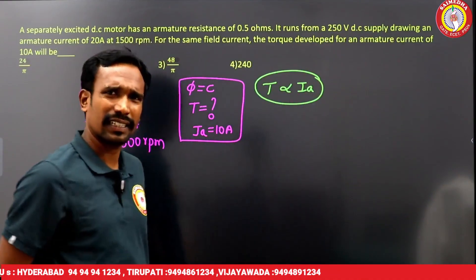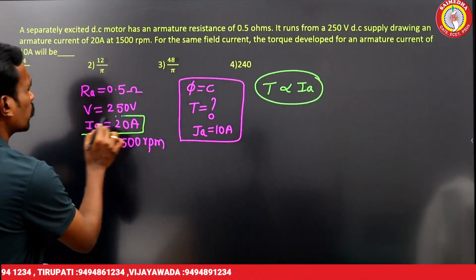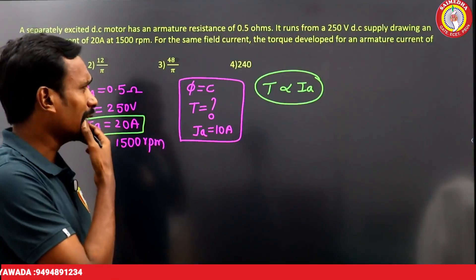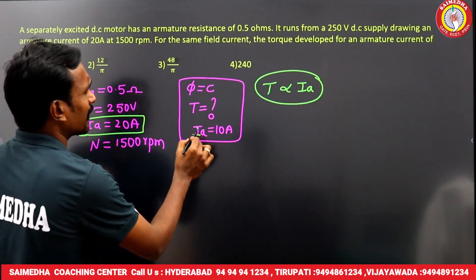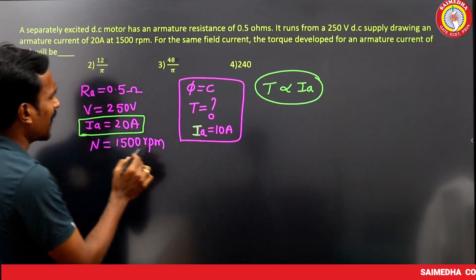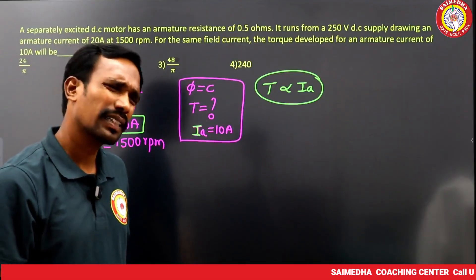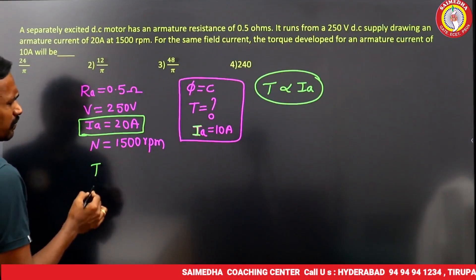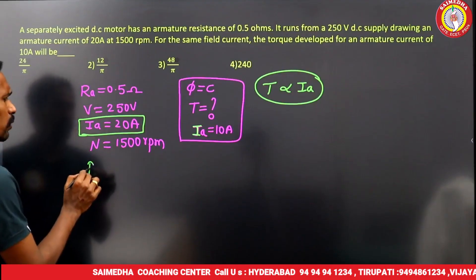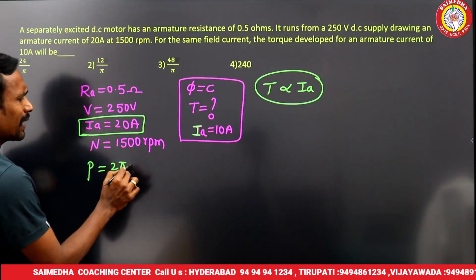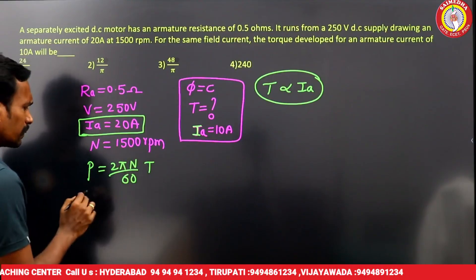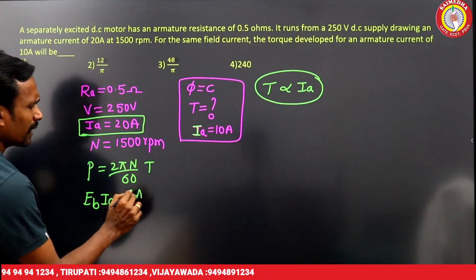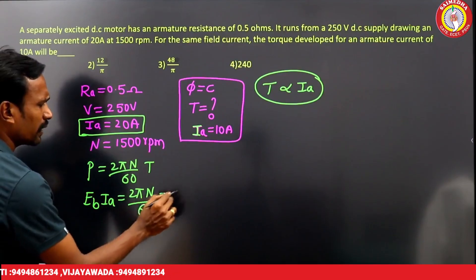First, calculate torque at 20 amperes. The formula is: power output = (2πN/60) × T, and power is also equal to Eb × Ia. So Eb × Ia = (2πN/60) × T.